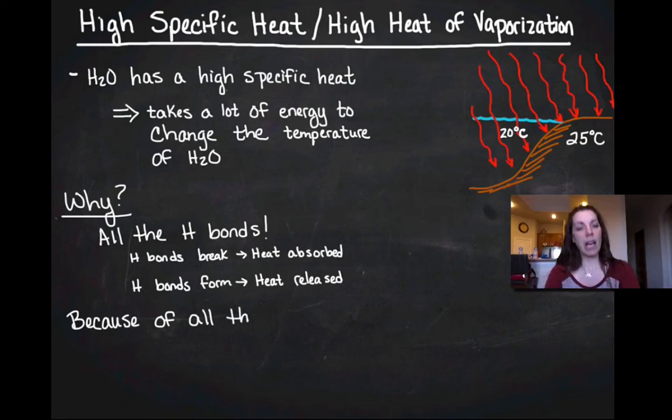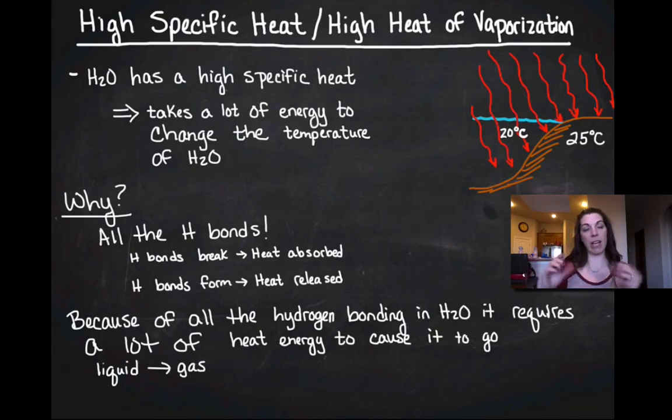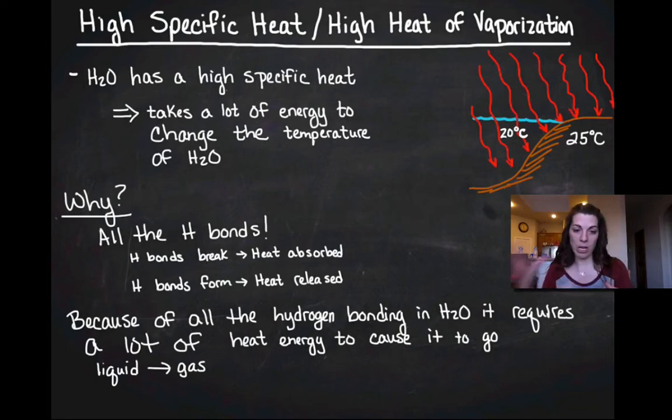So because of that, whenever I have a bunch of hydrogen bonding in water, it's going to require a lot of heat energy to cause those bonds to break down and for me to go from a liquid form to a vapor form. So if I want to switch the phase of water from liquid water to water vapor to a gas, what's going to have to happen is I have to add a ton of heat there to break all of those hydrogen bonds.